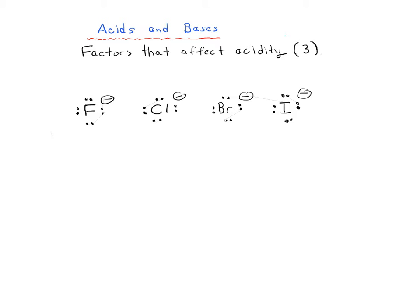Actually, as it turns out, of all of these anions, we can measure the stability in the acid-base constants. And it turns out that the iodide ion is actually the most stable, and it's the fluoride which is the least stable.